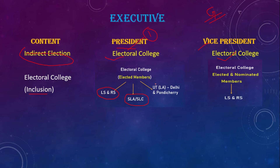Next, we can consider the Union Territories. As per 2021, the Union Territories that are part of the Electoral College include Delhi and Pondicherry.